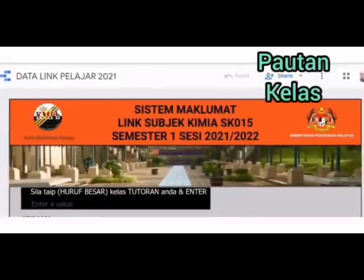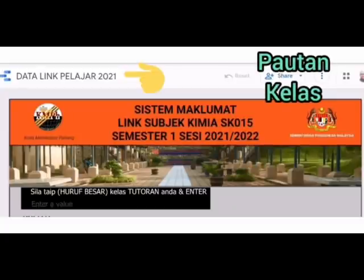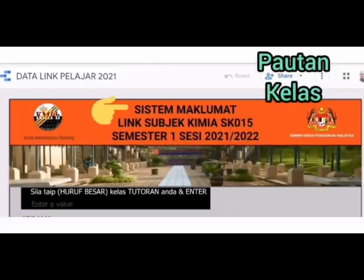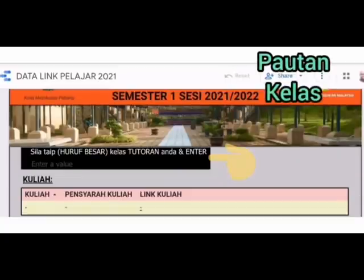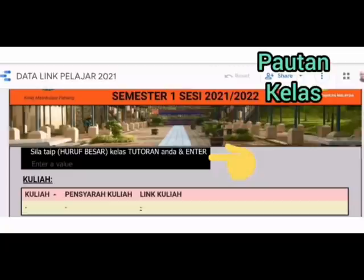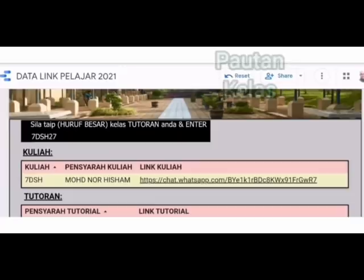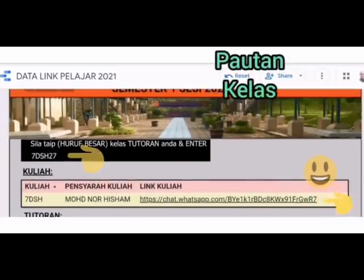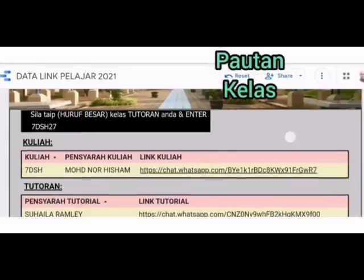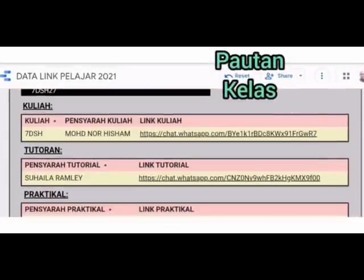Untuk mendapatkan link kelas masing-masing, pelajar boleh ke data link pelajar. Data ini menunjukkan sistem maklumat link subjek kimia SK 015. Sila taip nama kelas anda, kemudian tekan enter. Perbincangan ini akan terlihatkan.